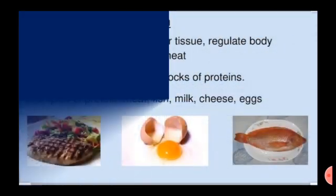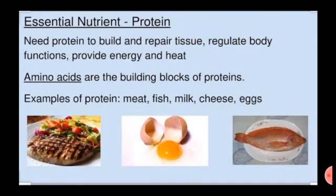Proteins. We need protein for the purpose of growth, repairing the wear and tear of the body, and for other life processes. We get protein from sprouts, milk, milk products, meat, and eggs. Proteins build and repair tissues, regulate body function, and provide energy and heat. Amino acids are the building blocks of protein.